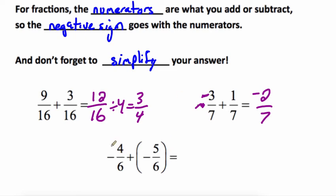Last one, negative 4 sixths plus negative 5 sixths. Same signs so we're going to add them together and keep the sign. So negative 9 sixths. That can be simplified. They can both be divided by 3. So I get negative 3 over 2 because I divided by 3.